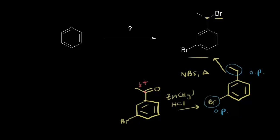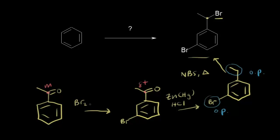Now that we have an acyl group, which is a meta director, that allows us to install the bromine meta to that acyl group. Thinking about the precursor, I just take off that bromine, leaving a ring with an acyl group. Since the acyl group is a meta director, all I need to do is a bromination reaction with bromine (Br2) and catalyst FeBr3, and that reaction will work.